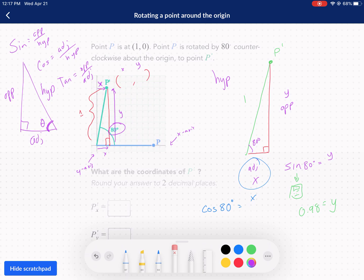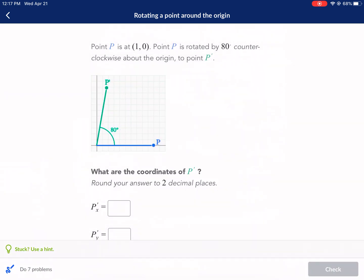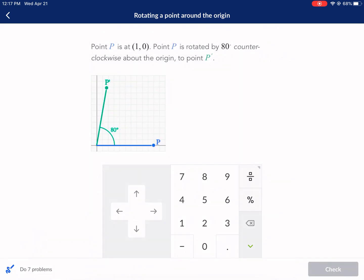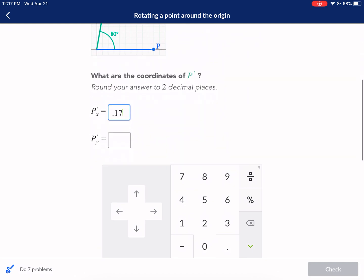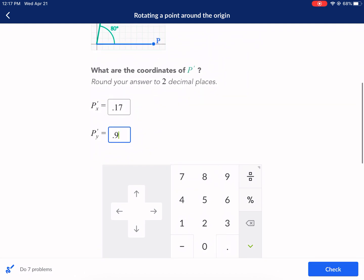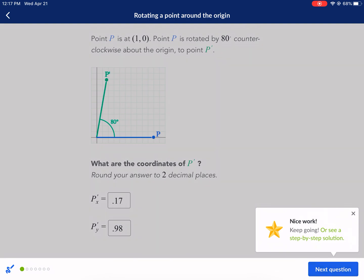So we honestly just need to type this into our calculator, and we're going to get x equals 0.17. So 0.17 is the x coordinate of this new point. So 0.17 and then 0.98 for the y, 0.98. And we're going to check that out. Next question.